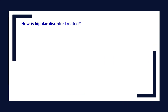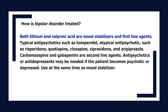How is bipolar disorder treated? Both lithium and valproic acid are mood stabilizers and first-line agents. Typical antipsychotics such as haloperidol, and atypical antipsychotics such as risperidone, quetiapine, clozapine, ziprasidone, and aripiprazole may also be used. Carbamazepine and gabapentin are second-line agents. Antipsychotics or antidepressants may be needed if the patient becomes psychotic or depressed — use at the same time as mood stabilizer.